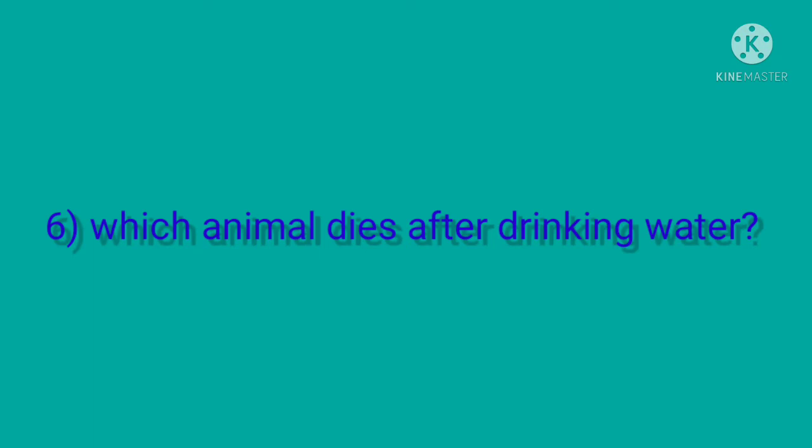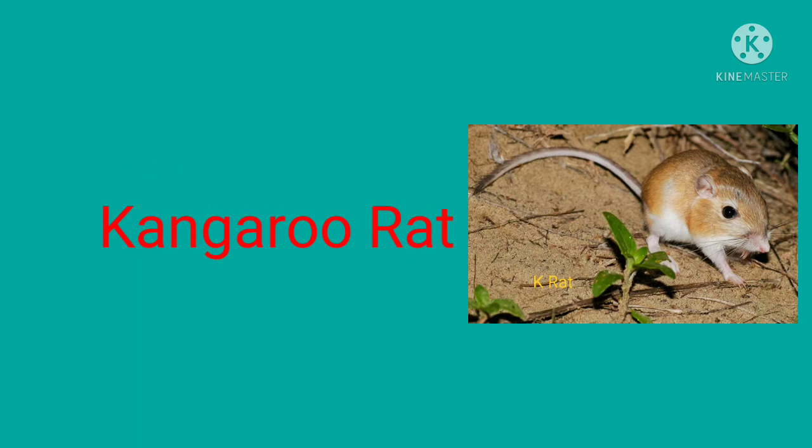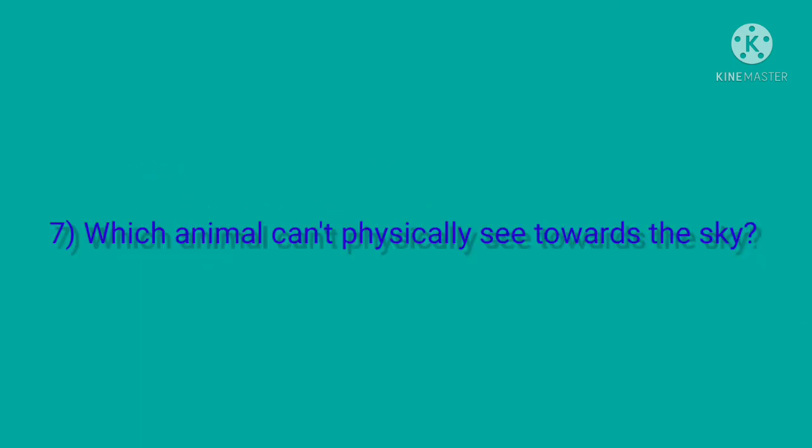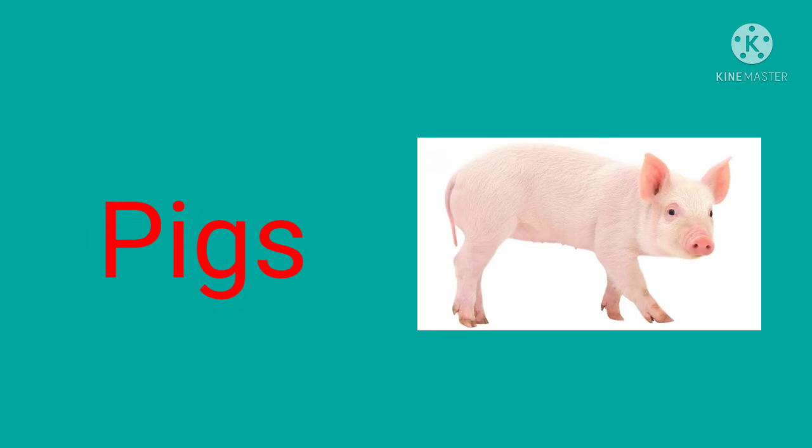Next question, which animal dies after drinking water? Answer is kangaroo rat. Next question, which animal cannot physically see towards the sky? Answer is pigs.